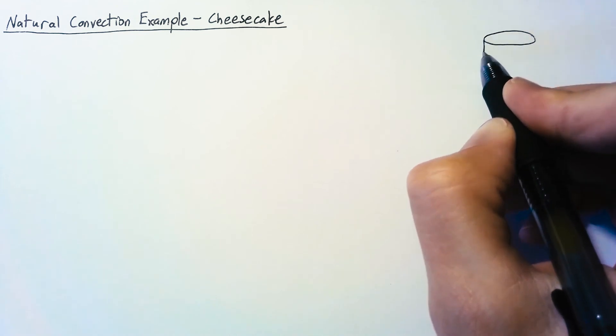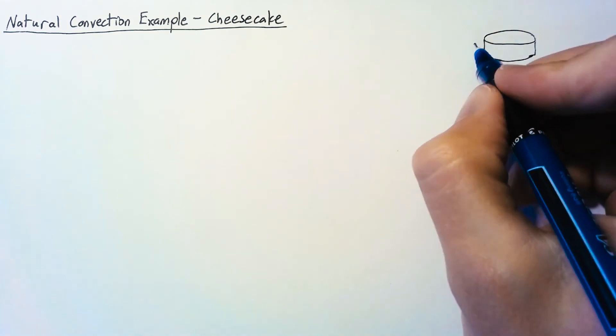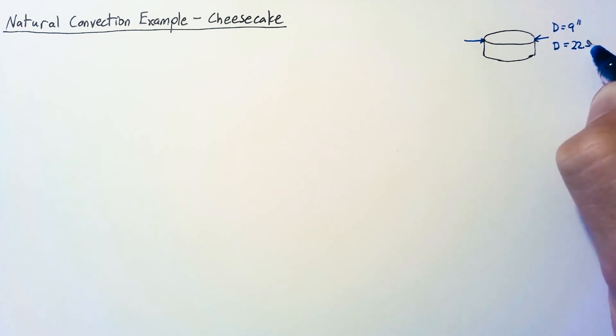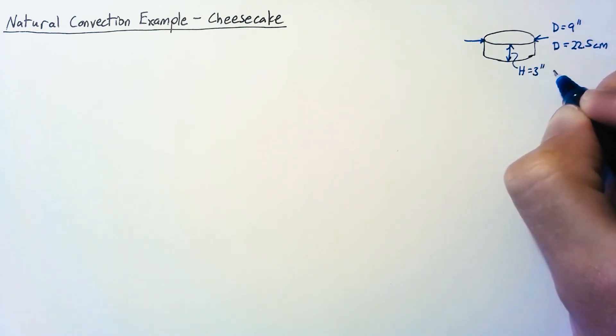We are going to assume that our cheesecake is perfectly cylindrical. It's going to have a diameter of 9 inches which we can convert to metric at 22.5 centimeters. We're also going to assume that our height is 3 inches which we will call 7.5 centimeters.